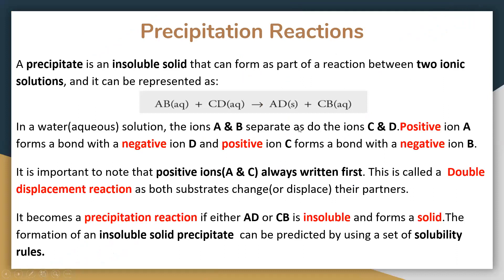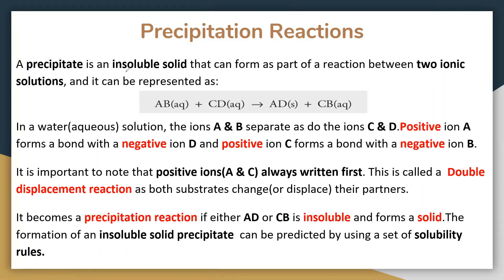Precipitation reactions are basically reactions that lead to one of the products being an insoluble solid. Can anyone take a guess at what insoluble means? Excellent — not able to dissolve in water. So in precipitation reactions we've got two compounds that do dissolve in water, or two ionic solutions, represented as AB and CD, and we'll look at real examples in the next few slides.